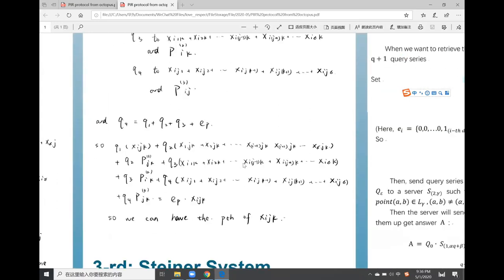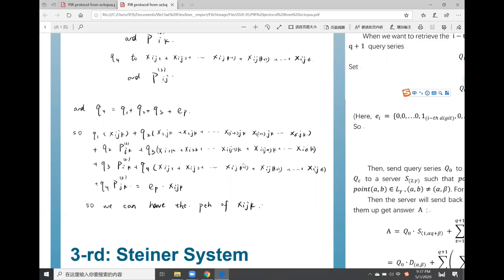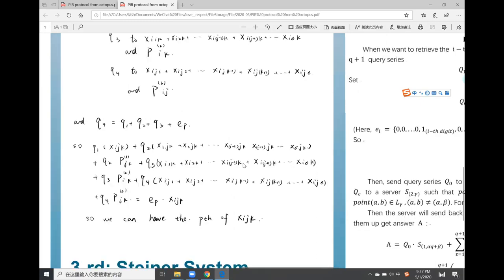And q4 equals q1 plus q2 plus q3 plus E_p. And then through this simple calculation which is shown in the picture, we can have the p-th part of x_igk.